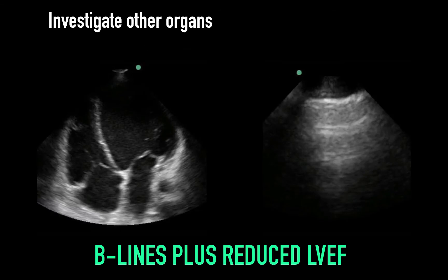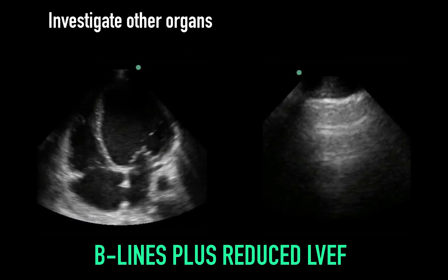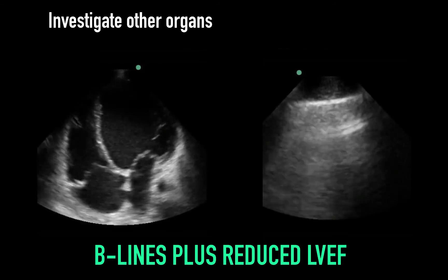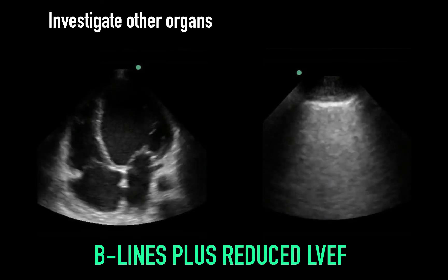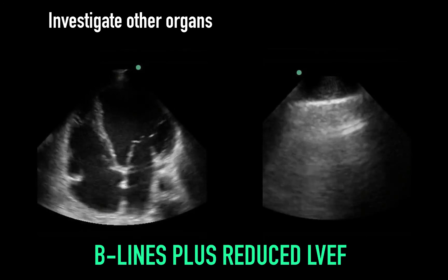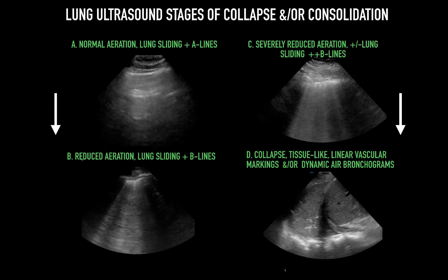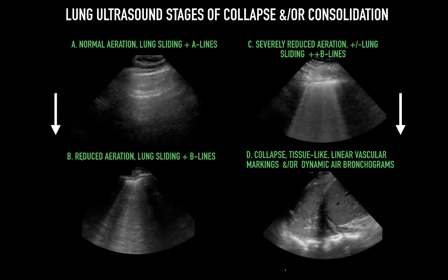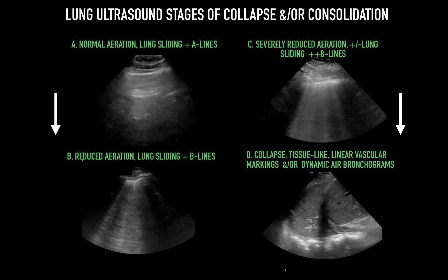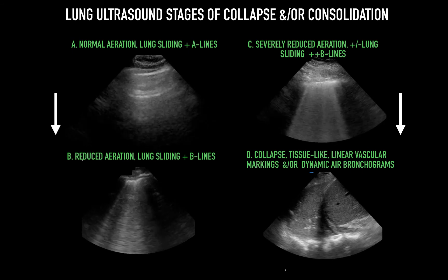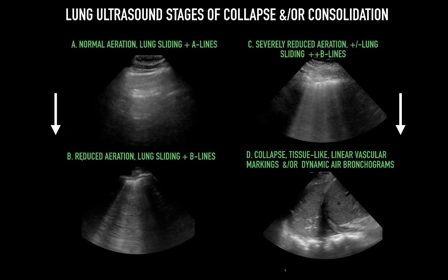Cardiogenic pulmonary edema usually maintains lung sliding. Scanning the heart can be a really useful adjunctive test. A patient with a newly depressed left ventricular ejection fraction and B-lines with a corresponding clinical history has a significantly increased likelihood of cardiogenic pulmonary edema. The development of consolidation is usually not appreciated on chest X-ray, but can be tracked on ultrasound. The pathophysiology behind this is the progressive reduction in aeration, which leads to the initial formation of B-lines.